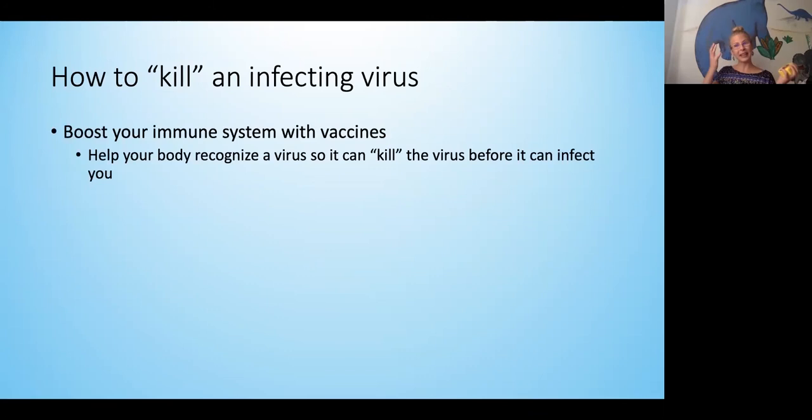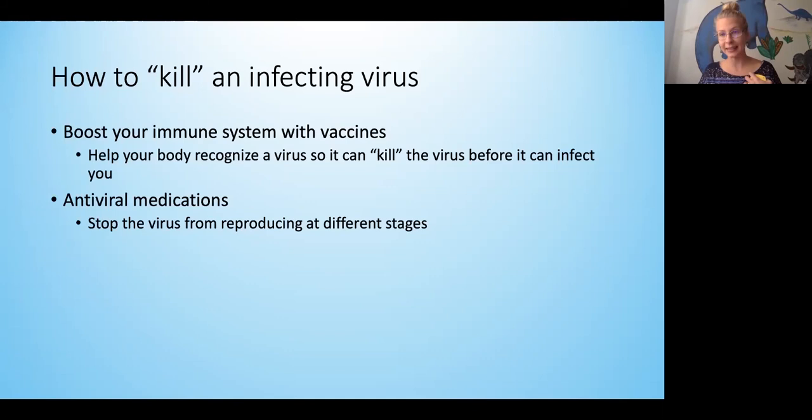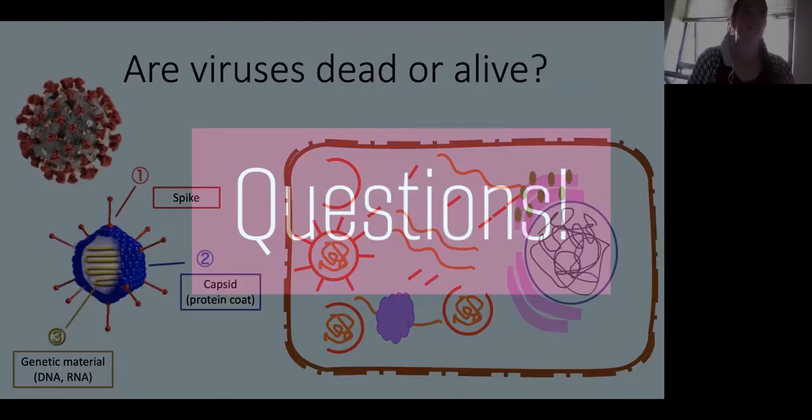And now when we want to kill a virus that's infecting our cells, we use different things. One of these is to use a vaccine. Vaccines are a different version of the virus - either it's a weaker version of the virus or something that looks like the virus. So then our immune system learns how to destroy the virus before it can make us sick. And then another way is to use medications or antiviral medications that destroy the virus from making new copies of itself inside the cell at different parts.